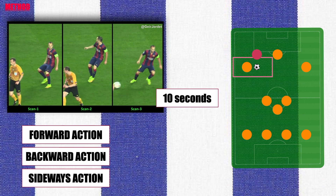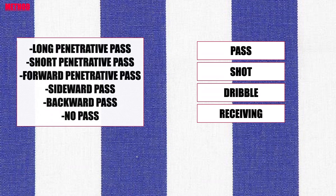Only vertical direction was measured in this variable, and possessions were only categorized as sideward in instances where it could not be determined as either forward or backward. Types of last actions registered were pass, short, dribble, and receiving. The types of passes registered were long penetrative pass, short penetrative pass, forward non-penetrative pass, sideward pass, backward pass, and no pass.